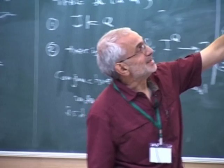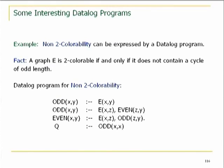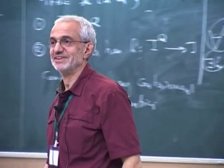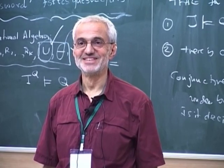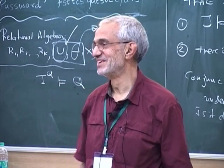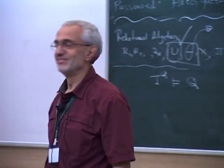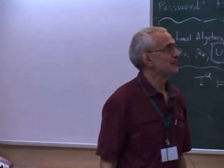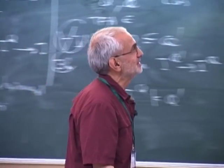That's a simple datalog program with a somewhat non-trivial proof of correctness, because you need to know the theorem from graph theory. As a sanity check — can we do three-colorability? We would collapse NP to P. Actually, it follows from the work of Immerman that we cannot even do it in least fixed point logic. Two-colorability and non-two-colorability are very special — that's where we draw the line.